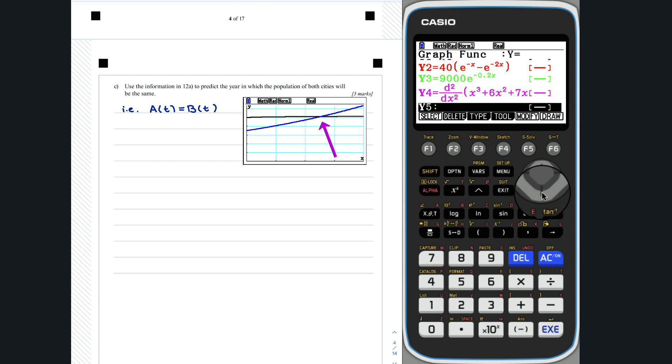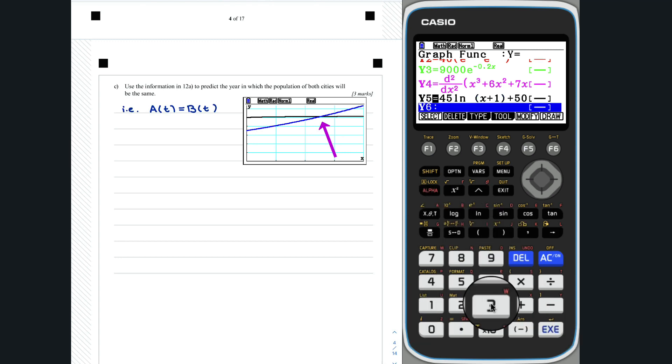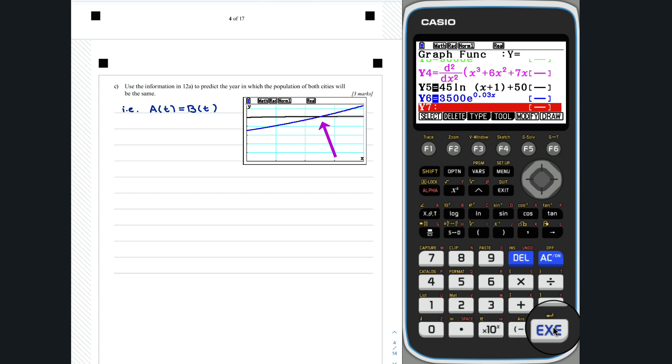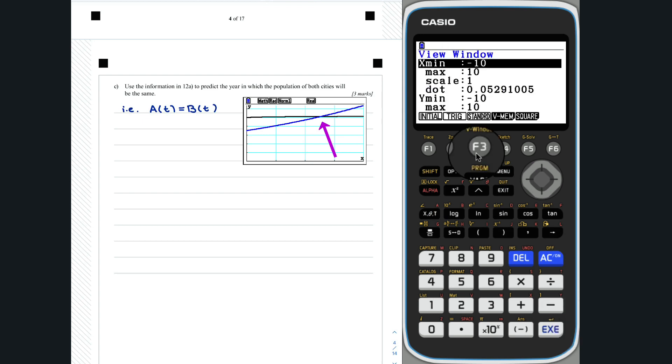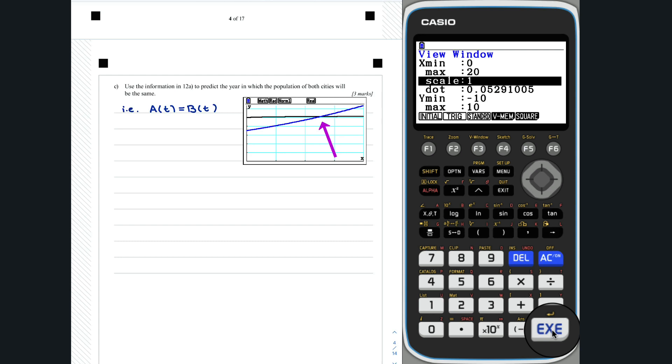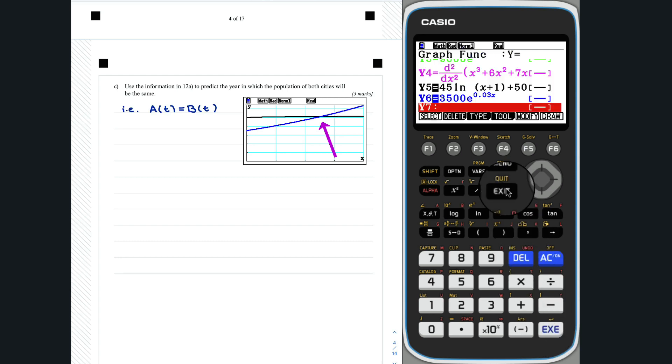Question 12c. To make sure we get an approximately good view window, we will set our x min to 0 and our y min to 20. To find a suitable range for our y values, we will use zoom auto.